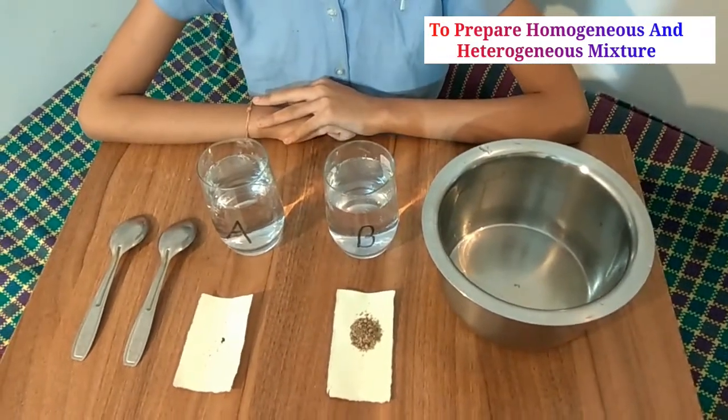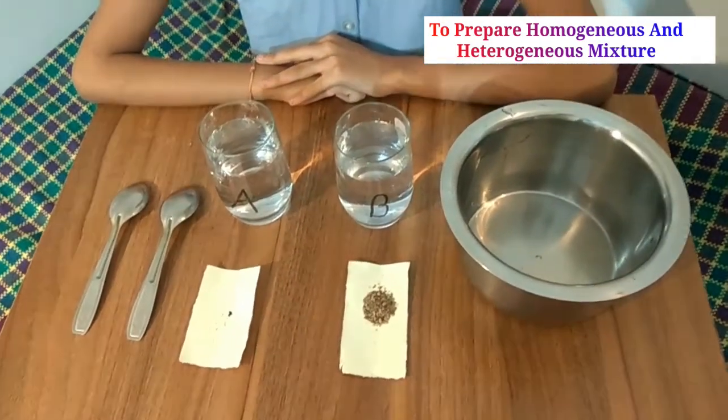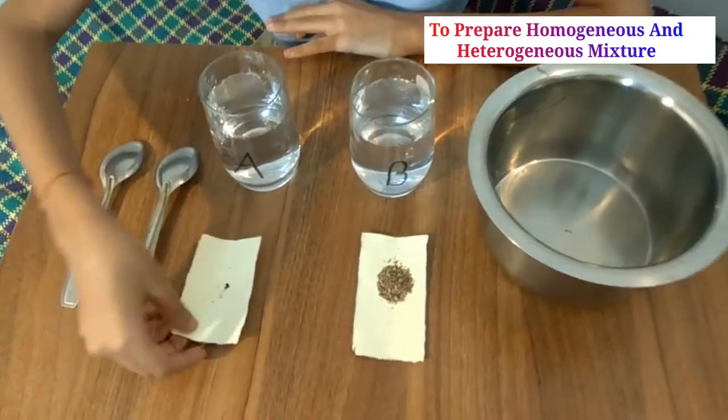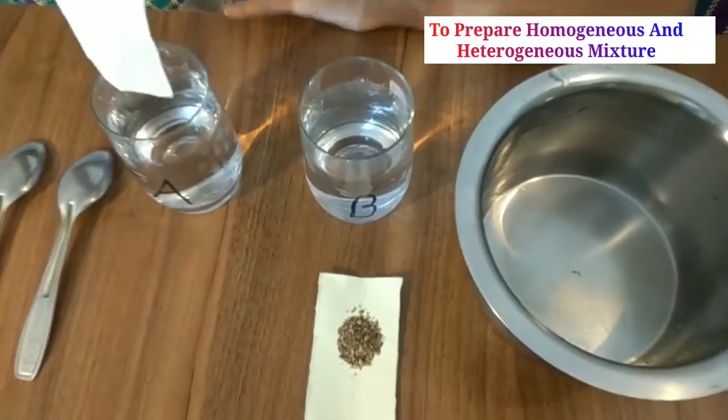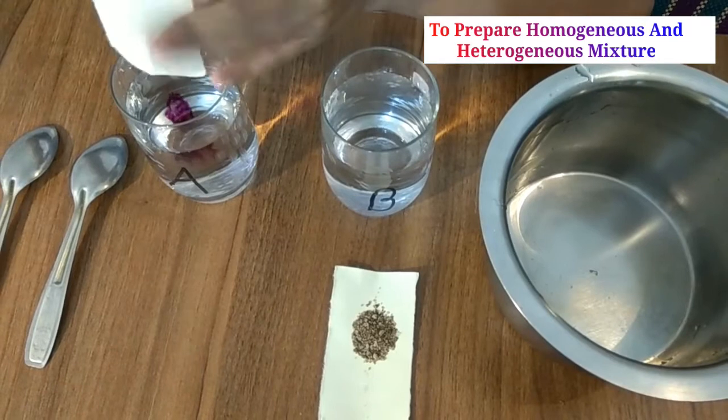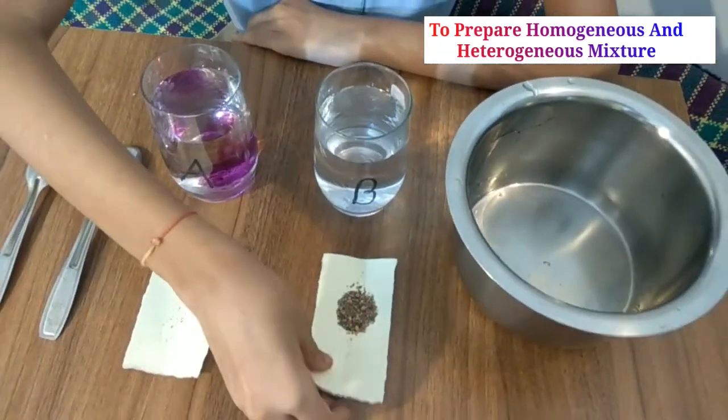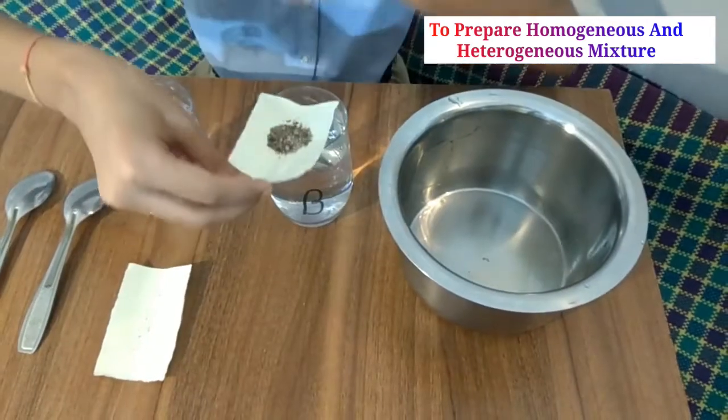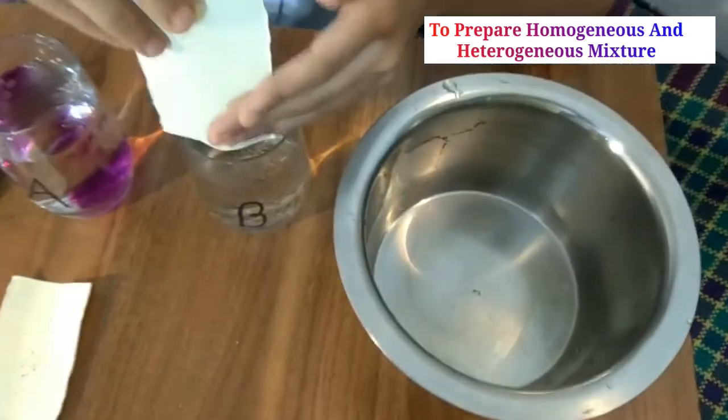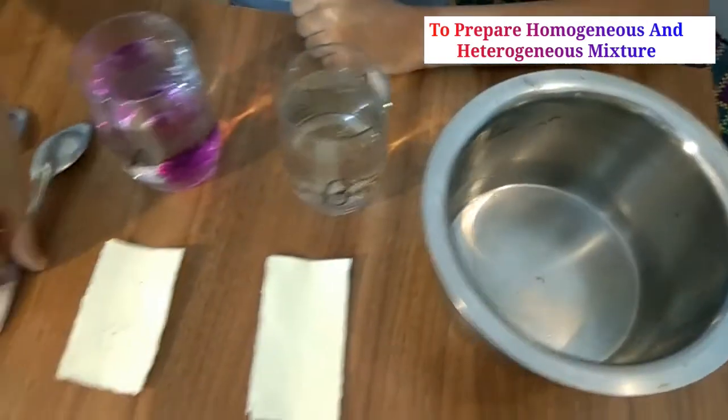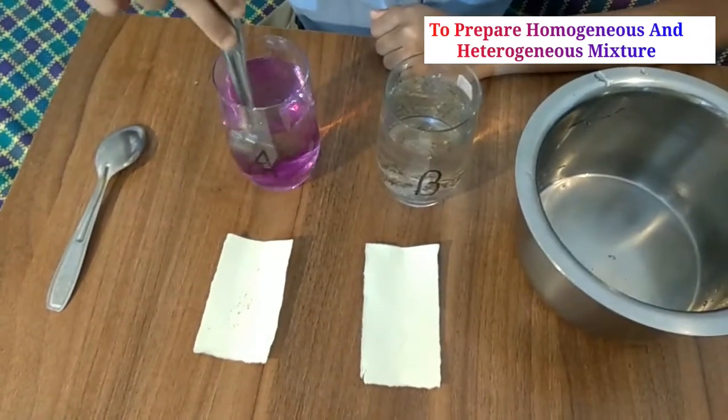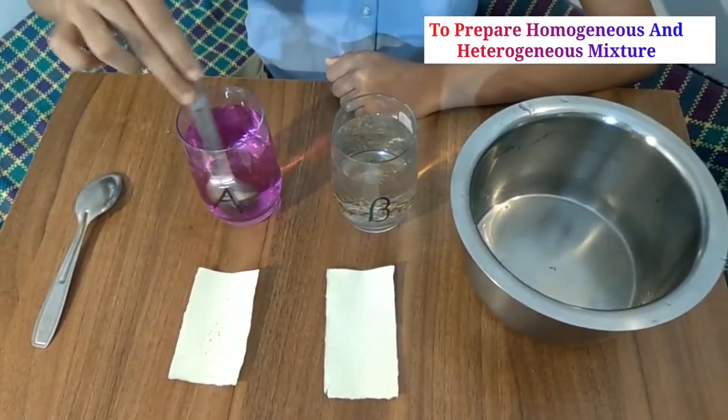Pour potassium permanganate in glass A. Pour sand in glass B. Stir with the help of the spoon.